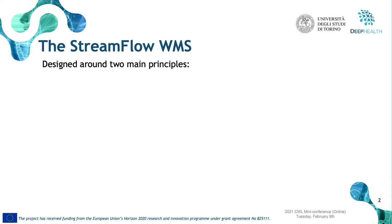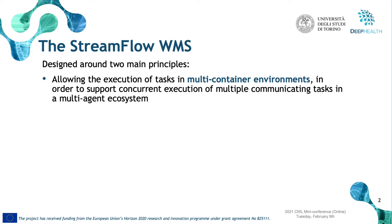The Streamflow framework has been designed around two main principles. The majority of container-native workflow systems nowadays allow mapping each step of a workflow to a dedicated Docker container in order to enhance the reproducibility of an experiment. What we wanted to do with Streamflow was to extend this feature to multi-agent environments such as those described in a Docker Compose file, a Kubernetes Helm chart, or an entire high-performance computing cluster. This can ensure co-location of a diverse set of applications while executing a single step of a workflow, so that the workflow management system can support concurrent execution of multiple communicating tasks in a multi-agent ecosystem.